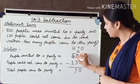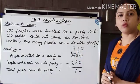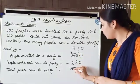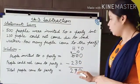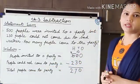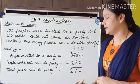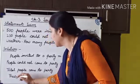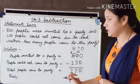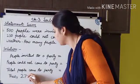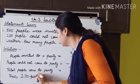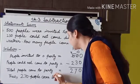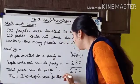This tens place borrowed one hundred from the hundreds place. One hundred equals ten tens, so we write ten here. The hundreds digit five becomes four because it already gave one hundred to the tens place. Four minus two is two. So the total people who came to the party is 270. Now we write the answer in a statement: 270 people came to the party.